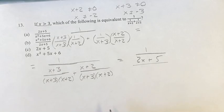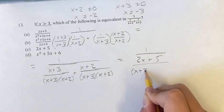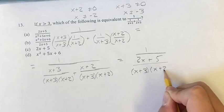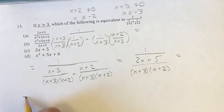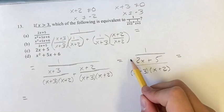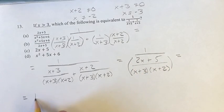And then dividing, we have x plus 3 times x plus 2. Okay, so we have 1 divided by this thing. So if we write it as this...